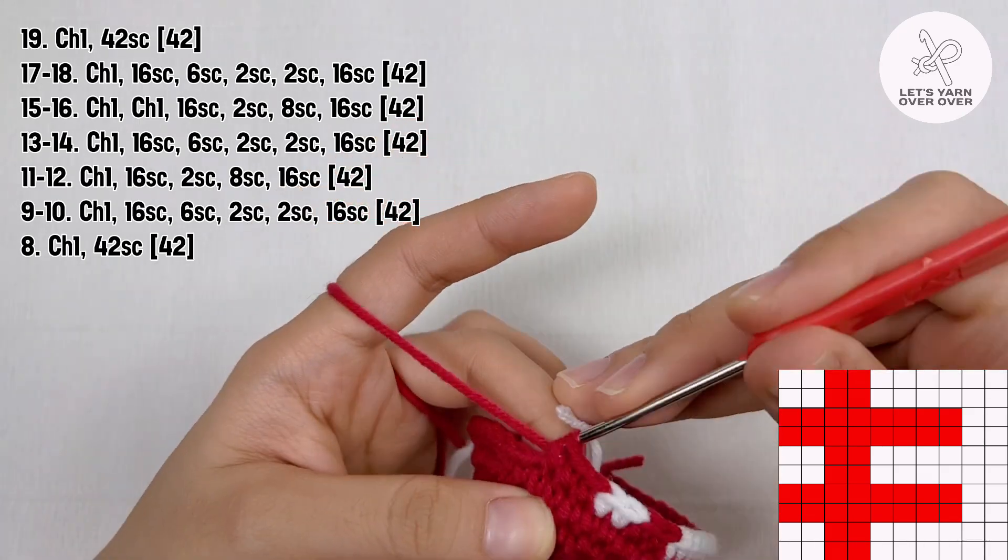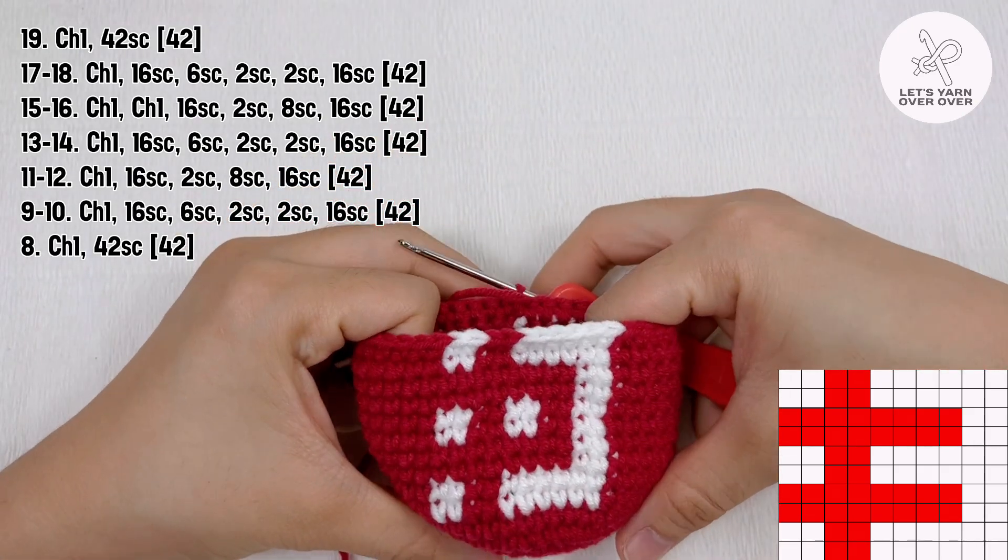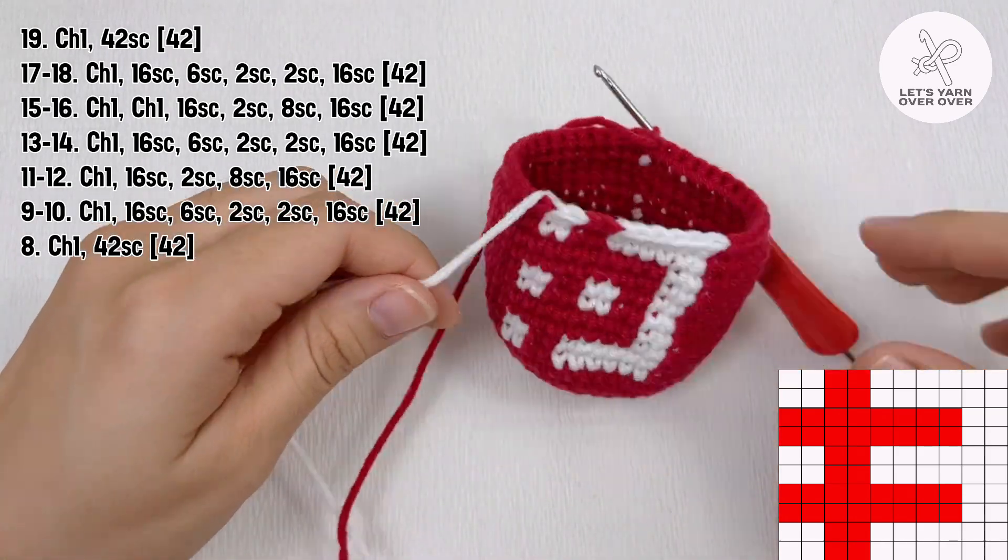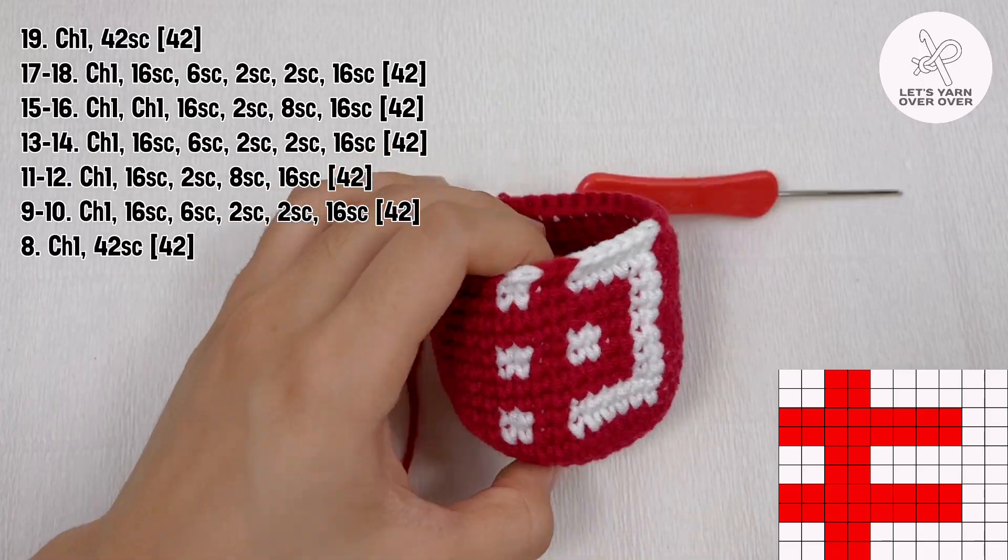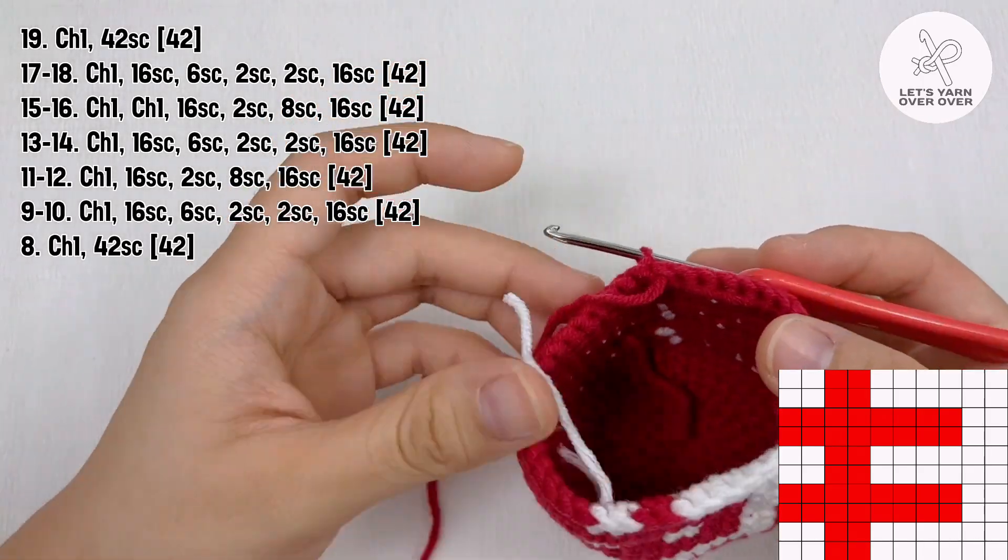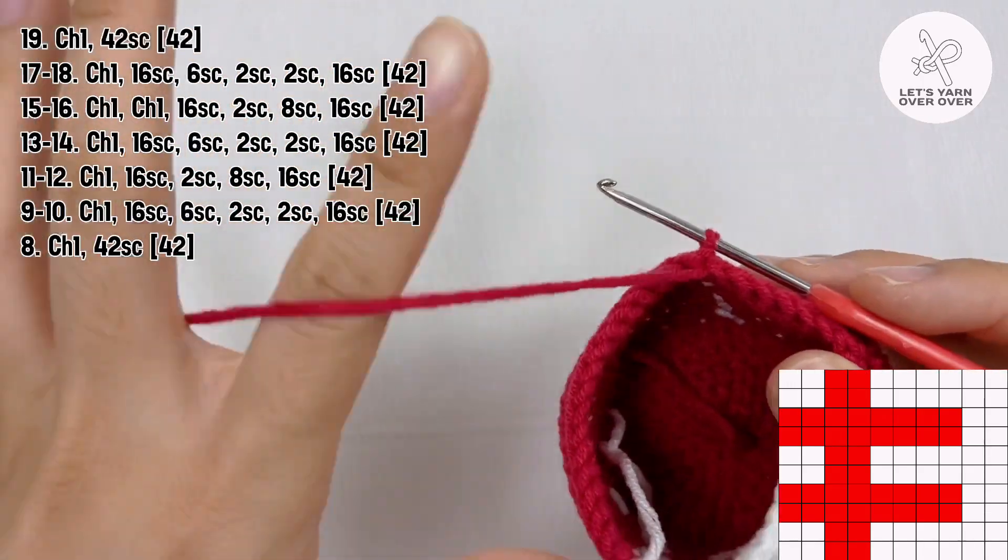This is what it looks like at the end of round 18. From this round onwards, there is no need to use white yarn, so I will cut it and hide the tail in the next round.